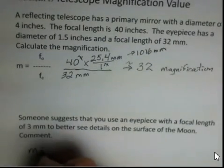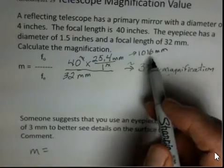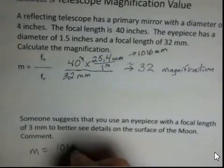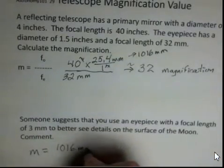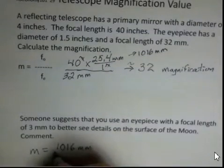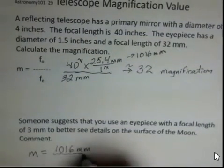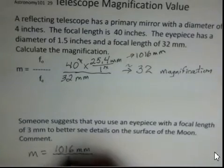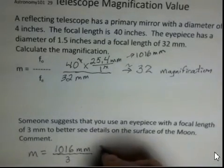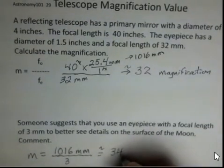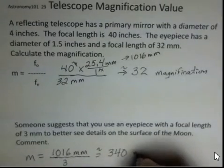And the magnification, if I go ahead and start with the 1016 millimeters, the focal length of the objective, the primary mirror, or the first lens in a refracting telescope, and I divide by three, that's roughly 340 power for the magnification.